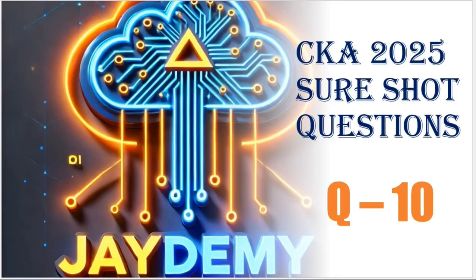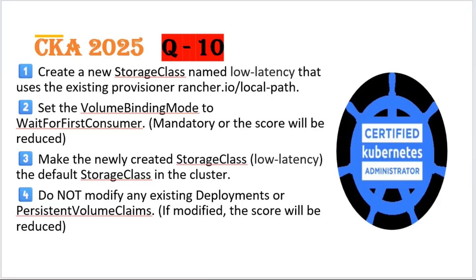In this CKA exam series, we'll discuss one more important question. The question says: create a new storage class named 'low-latency' that uses the existing provisioner 'rancher.io/local-path'. While creating it, we need to set the volume binding mode to 'WaitForFirstConsumer'. We also need to make the created storage class 'low-latency' the default storage class in the cluster, and we must not modify any existing deployments or persistent volume claims — doing so will reduce our score.